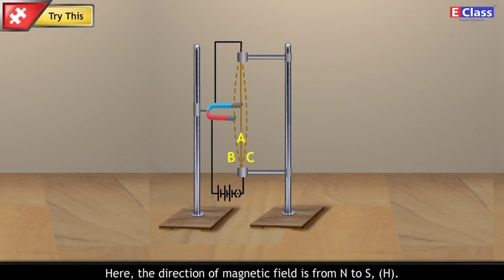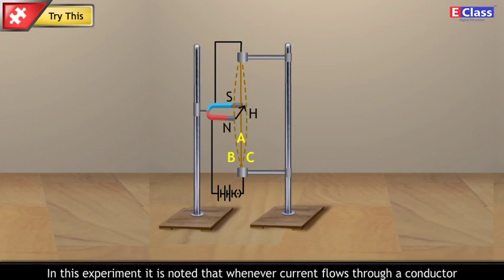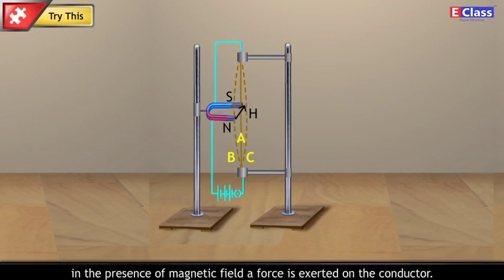Here, the direction of magnetic field is from N to S. In this experiment, it is noted that whenever current flows through a conductor in the presence of magnetic field, a force is exerted on the conductor.